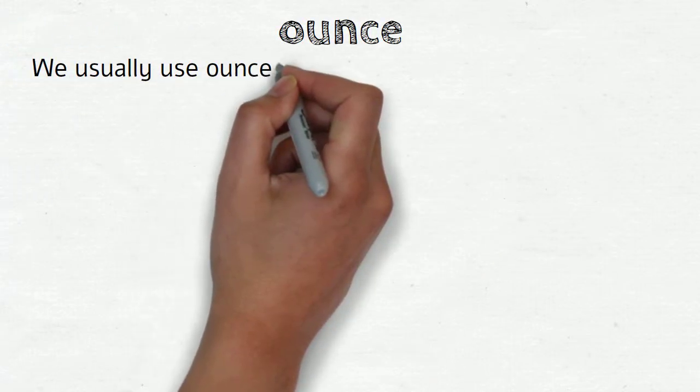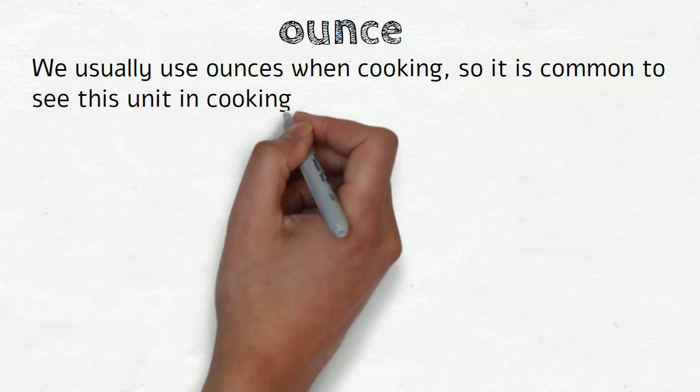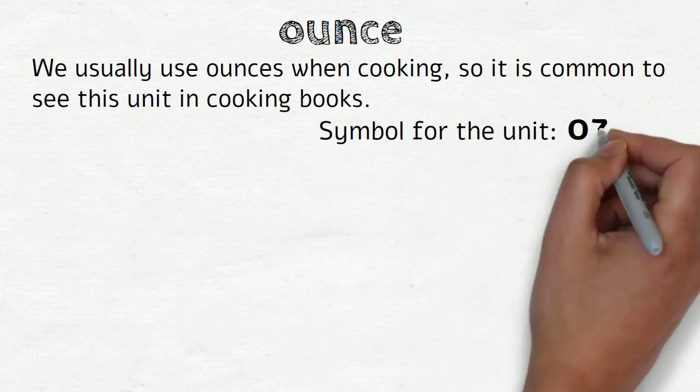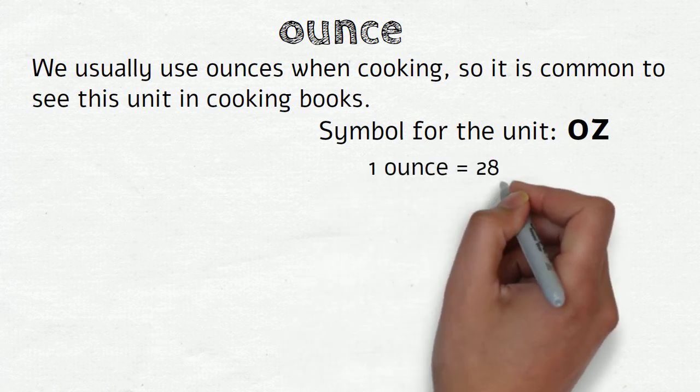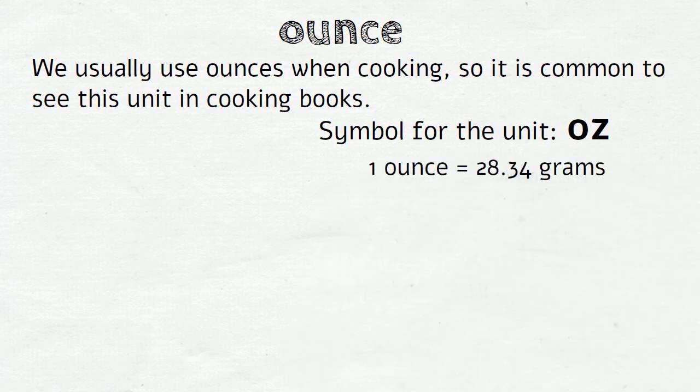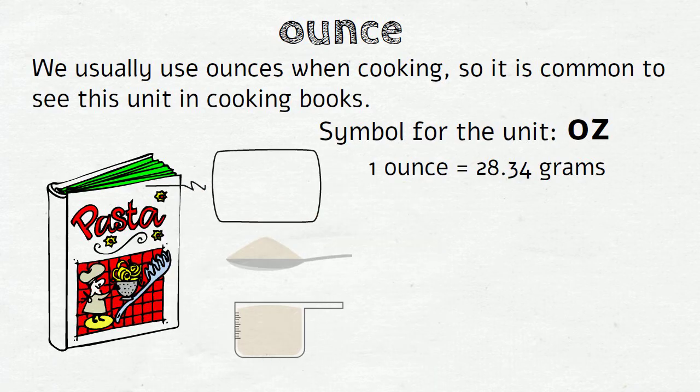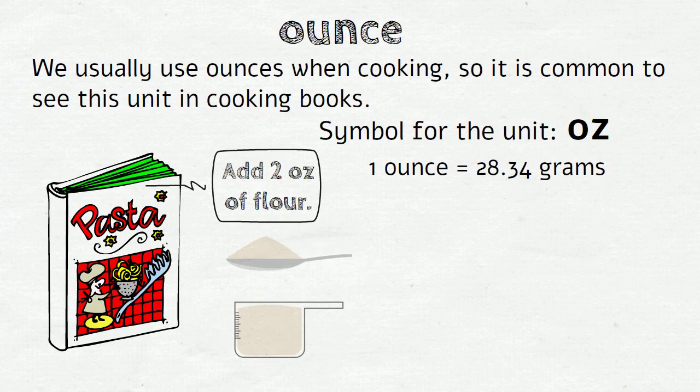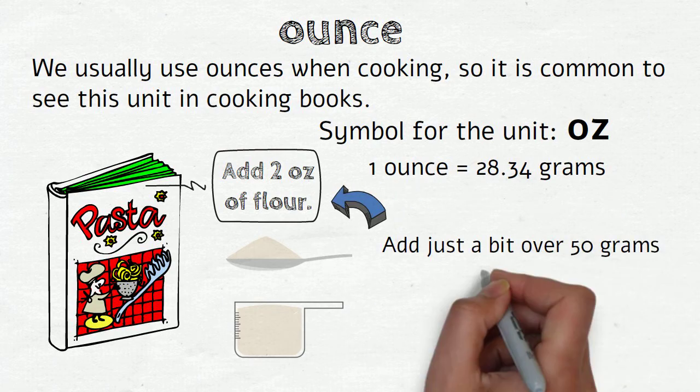We usually use ounces when cooking, so it is common to see this unit in cooking books. The symbol for this unit is oz. And 1 ounce equals 28.34 grams in a metric system. So if a recipe says 'Add 2 ounces of flour,' it means that you will need to add just a bit over 50 grams of flour.